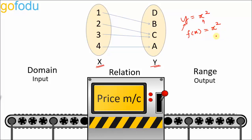For example, if x is 2, y will be 4; if x is 3, y will be 9. For one x there is only one y, but for one y there can be two values of x — this is allowed. If y is 4, then x can be +2 or −2. But for a given value of x, f(x) should have a unique value — then only it will be called a function.